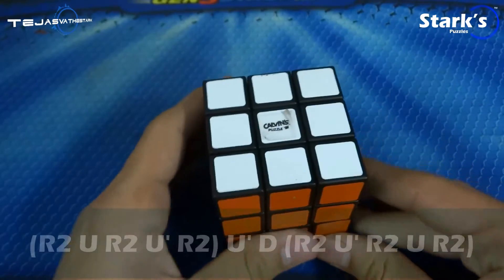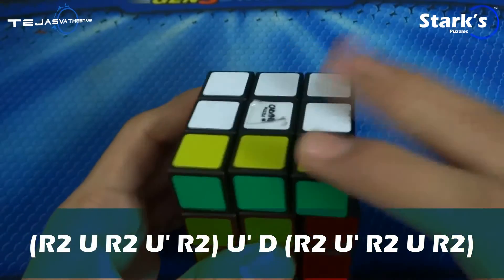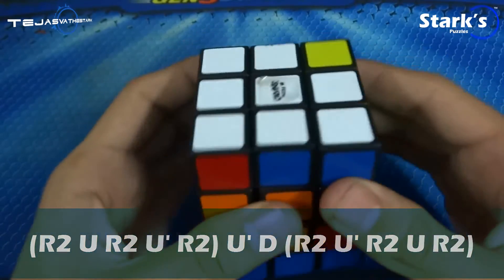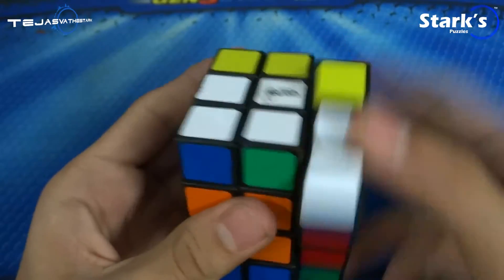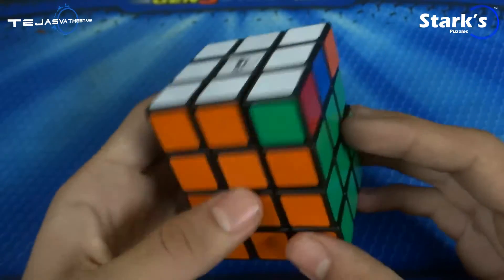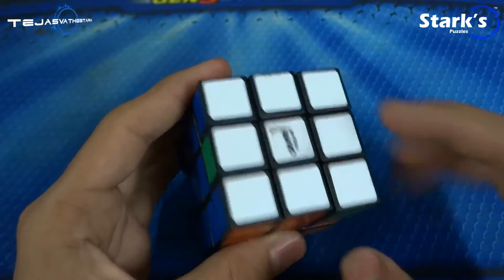The algorithm for this is r2 u r2 u prime r2 u prime d r2 u prime r2 u prime r2 u r2 and then d prime. As you can see these two got swapped and these two got swapped.